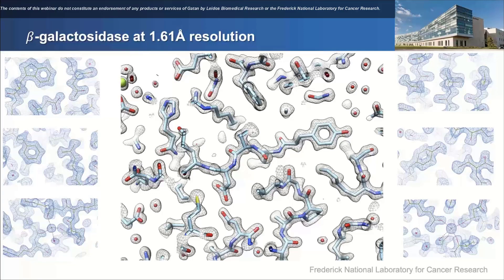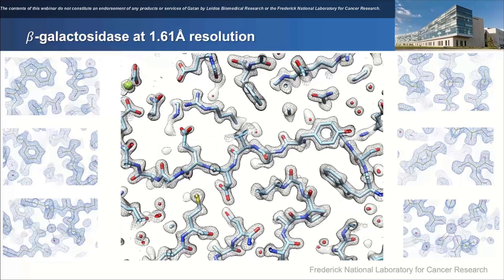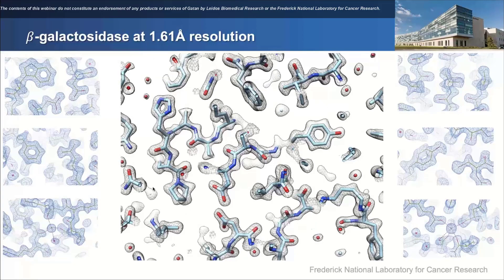Shown here is a 1.6 angstrom structure of beta-gal obtained from new data collected on the CryoArm 200. Probably the most noticeable new feature at 1.6 instead of 1.8 angstroms is that you can start to see the second hole in the tryptophan — visible in the top left — and also better density for the hydrogens. In the bottom left you can start to see some of the metals in the beta-gal, and on the right you can see a tyrosine with the hydrogen from the hydroxyl — these hydrogens that are not fixed relative to their parent atoms were very difficult to see at 1.8 angstroms; now at 1.6 we can start to see them better.